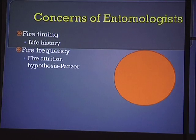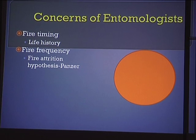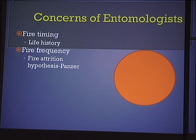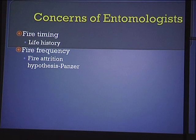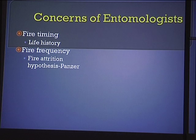Another concern of entomologists is the frequency of fire. Panzer in his 2000 paper talks about the fire attrition hypothesis — basically, you may not lose all of your diversity in one single fire event. What might happen is that with each successive fire event, your diversity gets just a little bit lower, a little bit lower, until you've really lost a good chunk of it. That's something to think about when you talk about management.